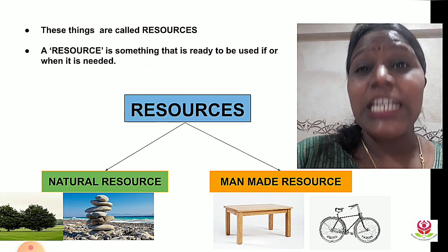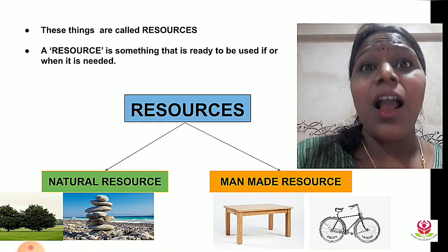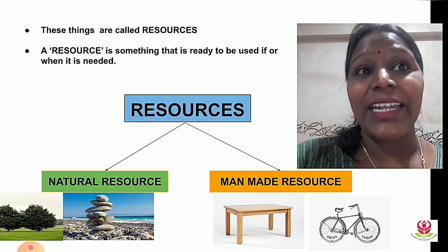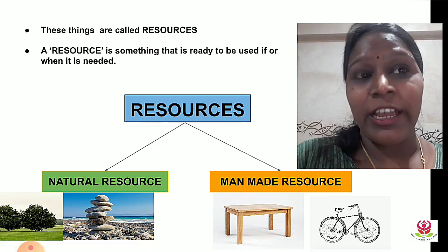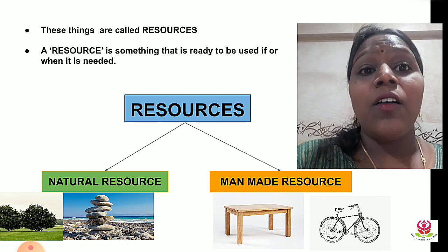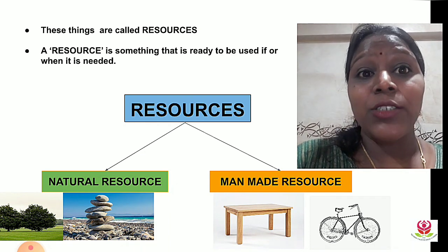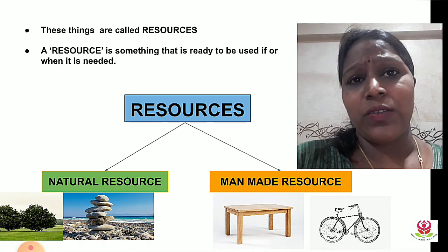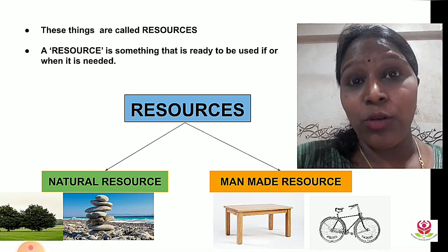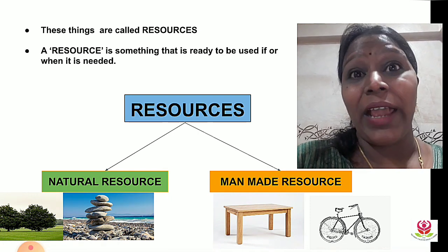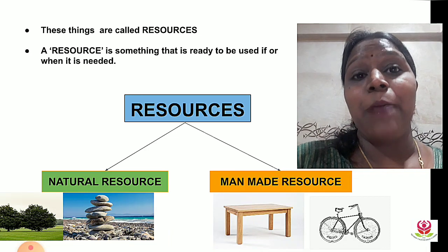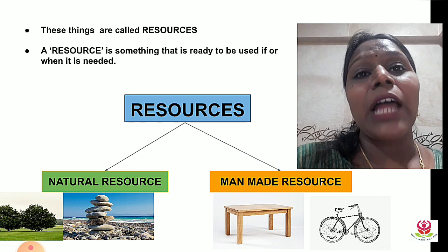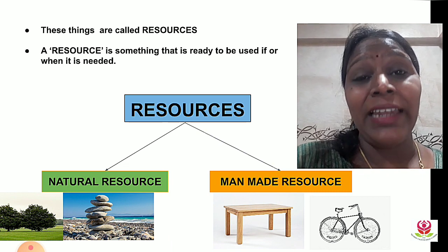Everything that we see in our surroundings is called a resource. A resource is something that is ready to be used if or when it is needed. We also saw there are two types of resources: natural resources and man-made resources. Natural resources are those that man cannot make — we directly get them from nature, for example, the tree, the stone, and the sun.